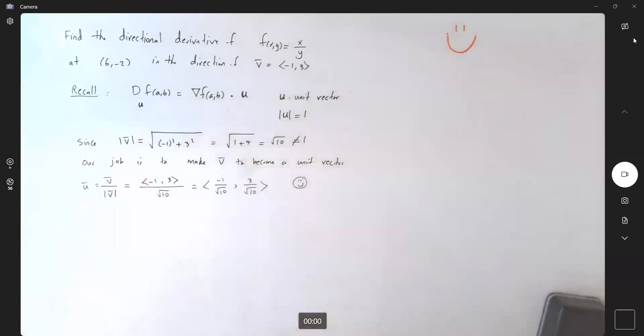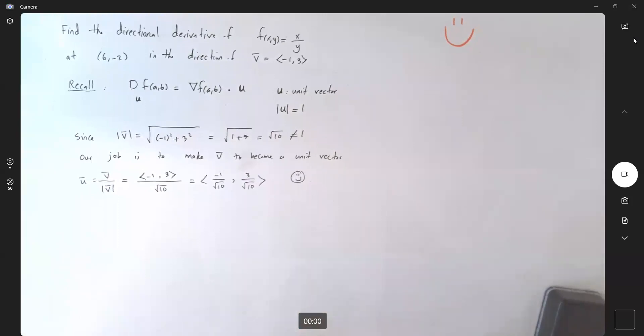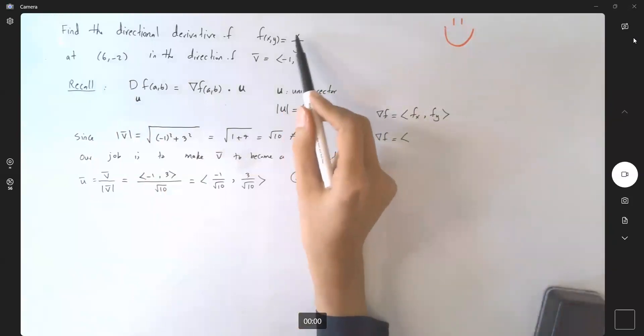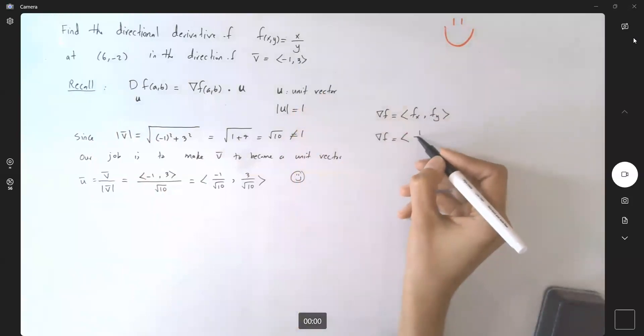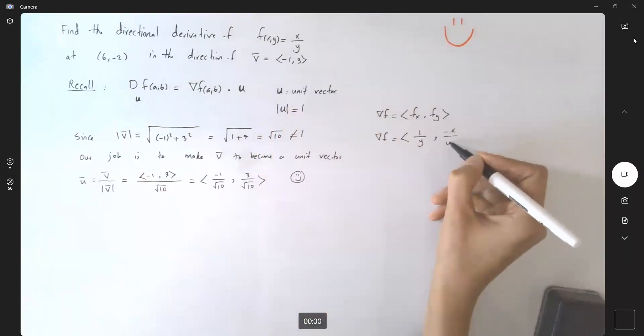Let us move on to find the gradient of the function f. So the gradient of function f is defined as partial derivative of f with respect to x, and partial derivative of f with respect to y. The gradient of f becomes, what is the partial derivative of this function with respect to x? In this case, y is just a constant. So you get 1/y, and then the partial derivative with respect to y becomes -x/y².